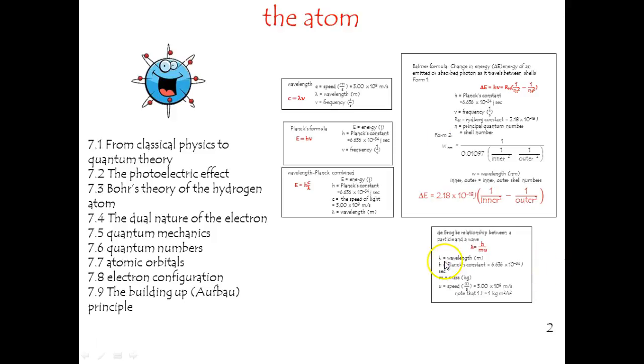The de Broglie formula is interesting. We can find the wavelength of just about anything by having it be equal to Planck's constant over the mass times mu here, which is just another form of the speed of light. They use c here.